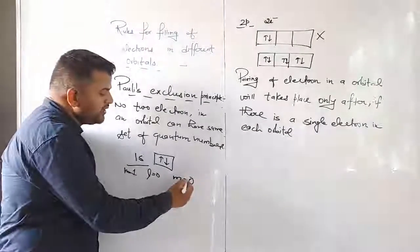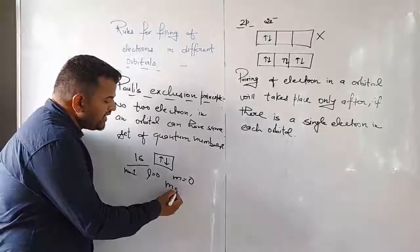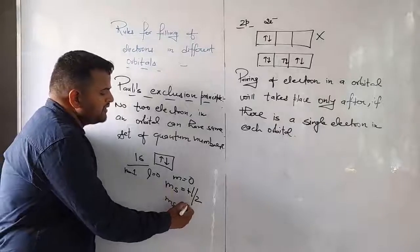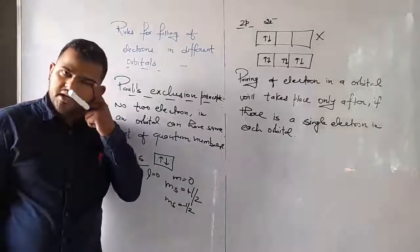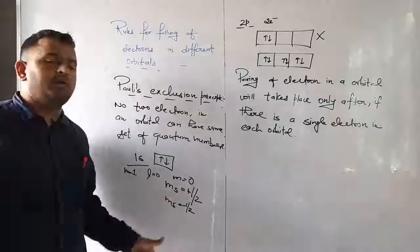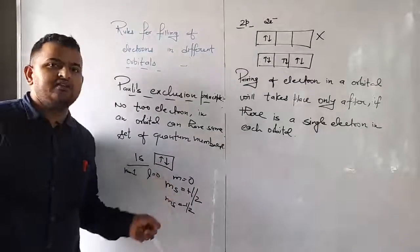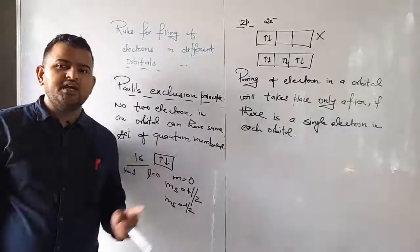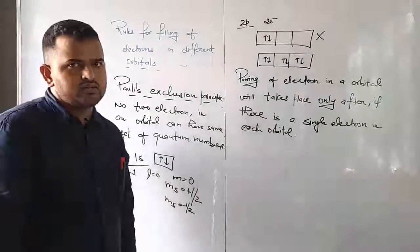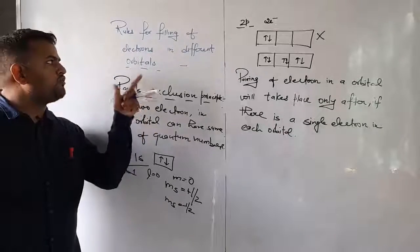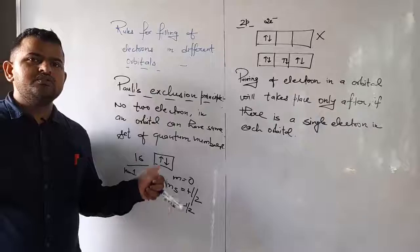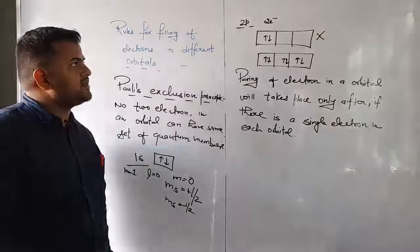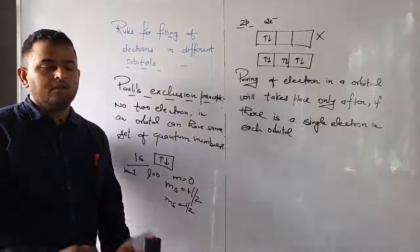For two electrons in the same orbital, the spin quantum number will be different — one will be +½ and the other will be -½. This means that for two electrons in the same orbital, the first three quantum numbers may be the same, but the spin quantum number is always different. One spin will be upward and the other will be downward. This is Pauli's exclusion principle. These are the three rules for filling electrons in orbitals. The next topic is electronic configuration, which we will discuss in the next class.